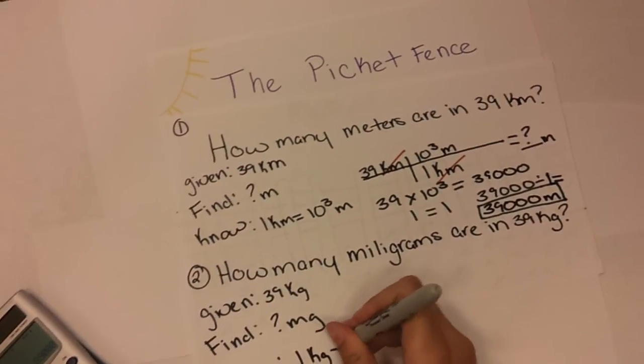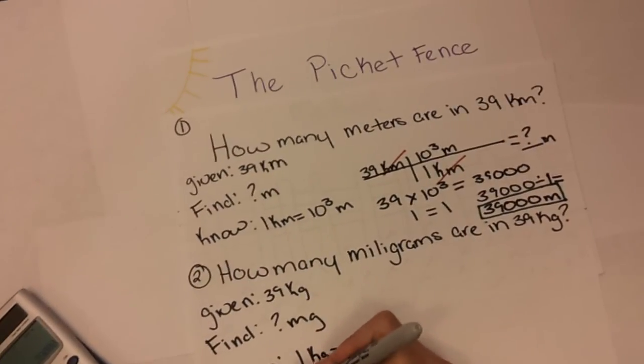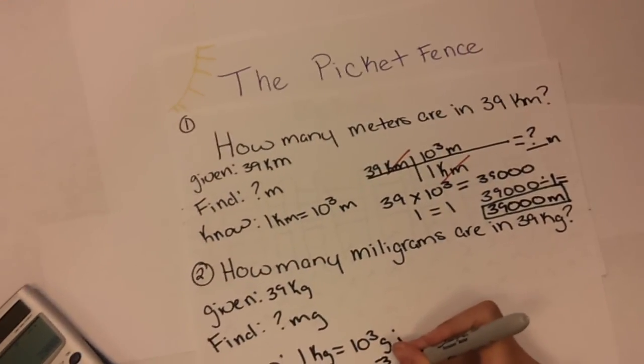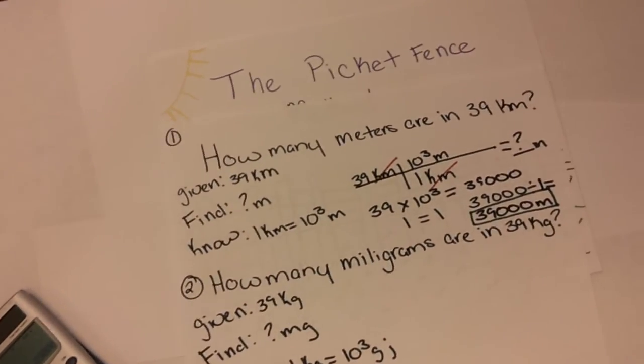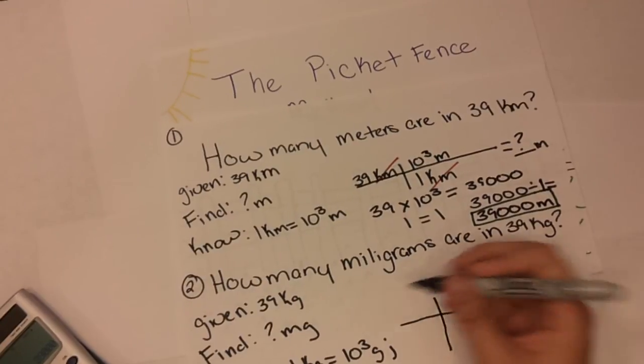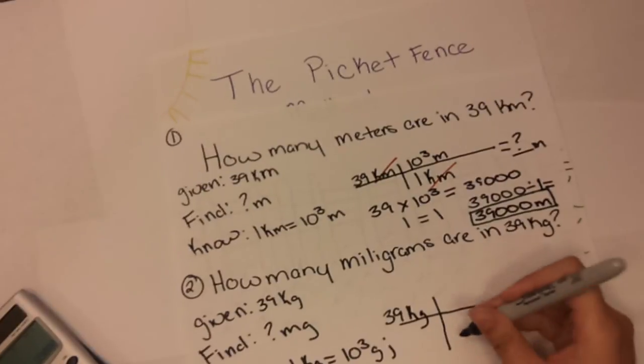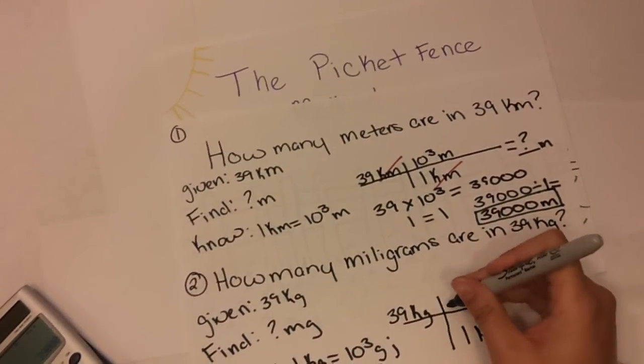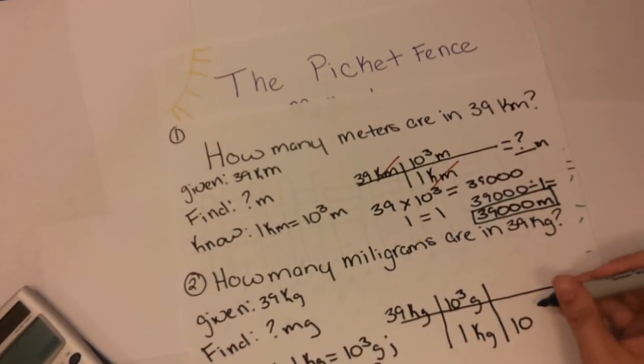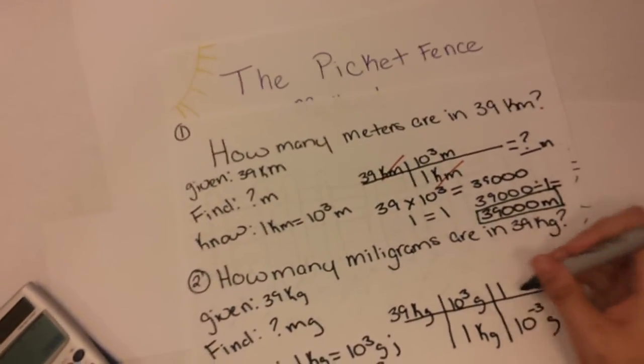And we know because we're using our conversion factors and reference information that there is one kilogram to 10 to the third grams. One milligram, which equals 10 to the negative third grams, and we are going to use this information right here. We have 39 kilograms. In one kilogram there is 10 to the third grams. In 10 to the negative third grams there is one milligram.